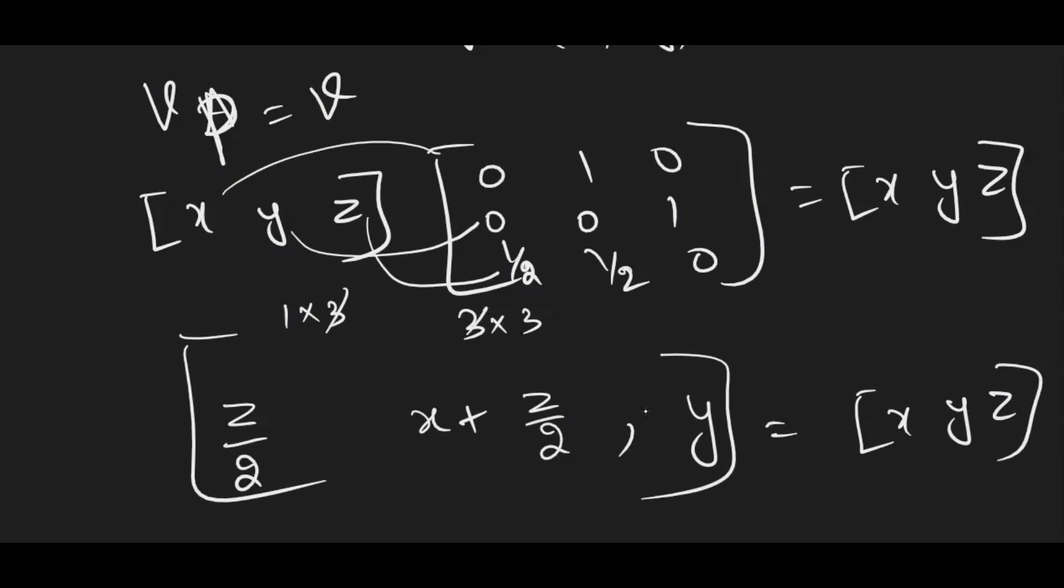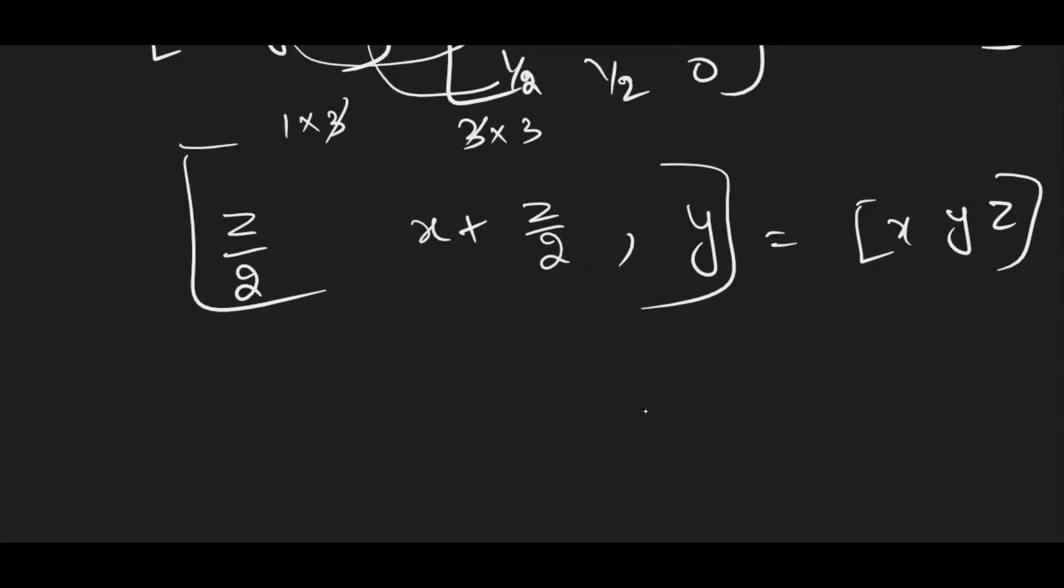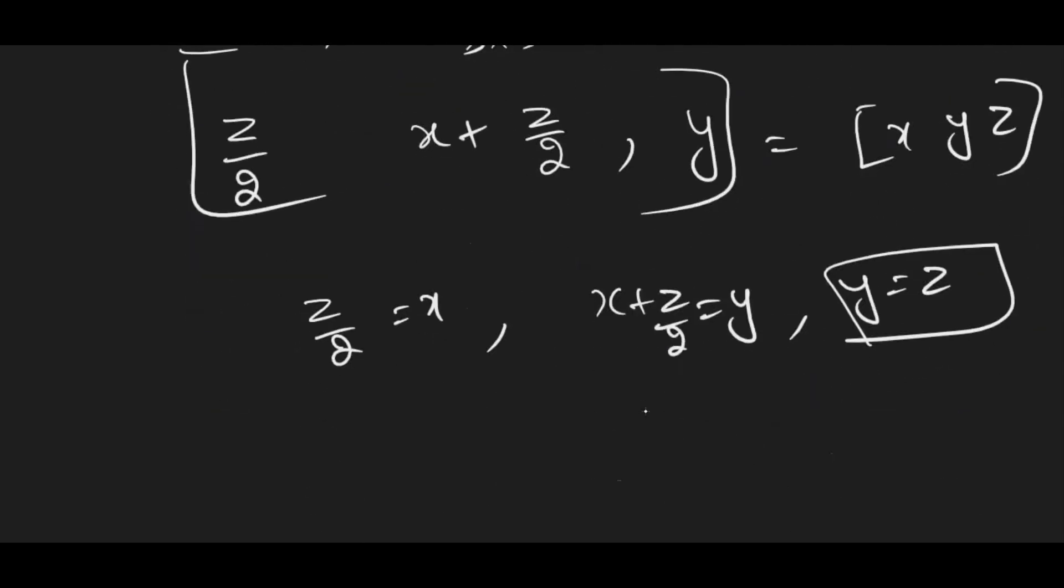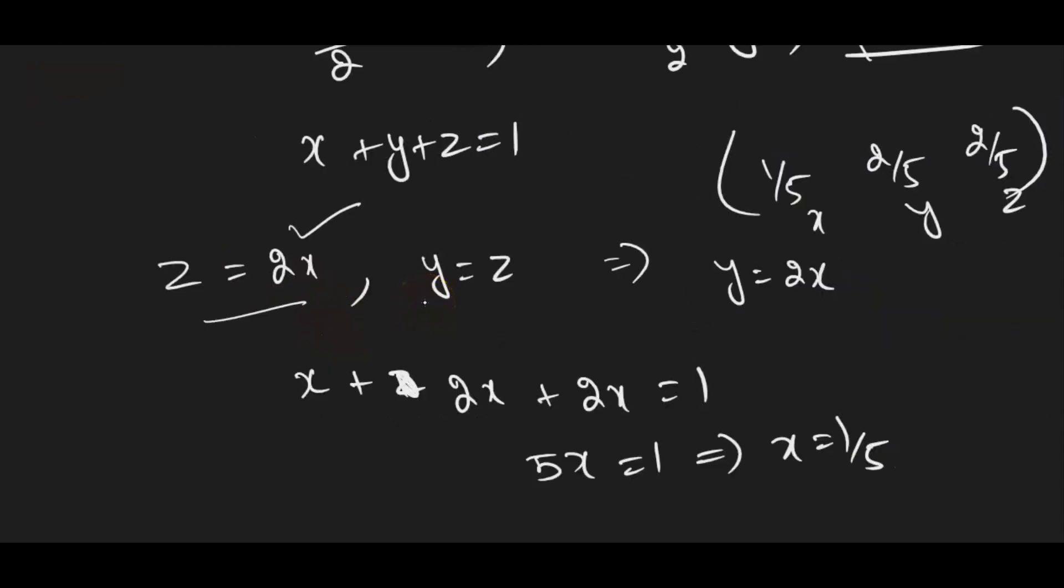So you can use the 3 equations. From these 3 equations, if you take the first one, z/2 = x, second equation is x+z/2 = y and third equation is y = z. So you can replace y in terms of z, x also in terms of z and then you have the formula, right? x+y+z = 1. From this, you can substitute the other two. Try to solve it on your own and see here from the first equation, we got y = 2x. From the second equation, we got y = z. So I can write in the place of z, I can replace 2x, y = 2x.